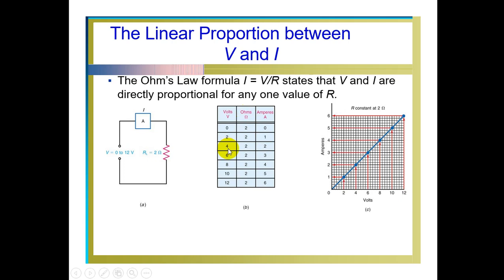We are keeping the points according to the calculation, then drawing a line that passes through from 0. It's a straight line passing through the origin. You can see the diagram on the screen.